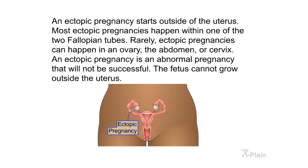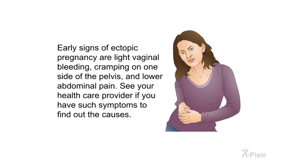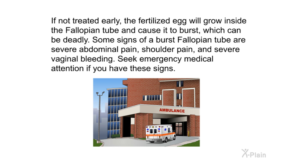Summary: An ectopic pregnancy starts outside of the uterus, most commonly in one of the two fallopian tubes. Rarely, ectopic pregnancies can happen in an ovary, the abdomen, or the cervix. It is an abnormal pregnancy that will not be successful, as the fetus cannot grow outside the uterus. Early signs include light vaginal bleeding, cramping on one side of the pelvis, and lower abdominal pain. If not treated early, the fertilized egg will grow inside the fallopian tube and cause it to burst, which can be deadly. Signs of a burst fallopian tube include severe abdominal pain, shoulder pain, and severe vaginal bleeding — seek emergency medical attention if you have these signs.